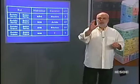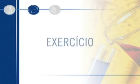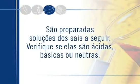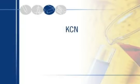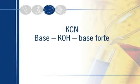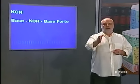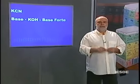Vamos prever umas reações? São preparadas soluções dos sais a seguir. Verifique se elas são ácidas, básicas ou neutras. Primeiro sal: KCN. Com o K, descubro de que base ele vem; com o CN, de que ácido ele vem. Base de origem: KOH — base forte, pois K é metal alcalino e hidroxido alcalino é sempre forte.